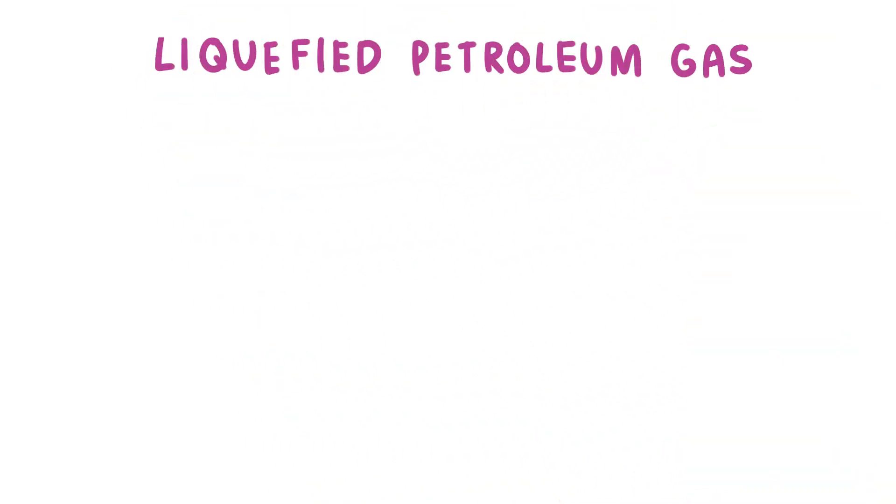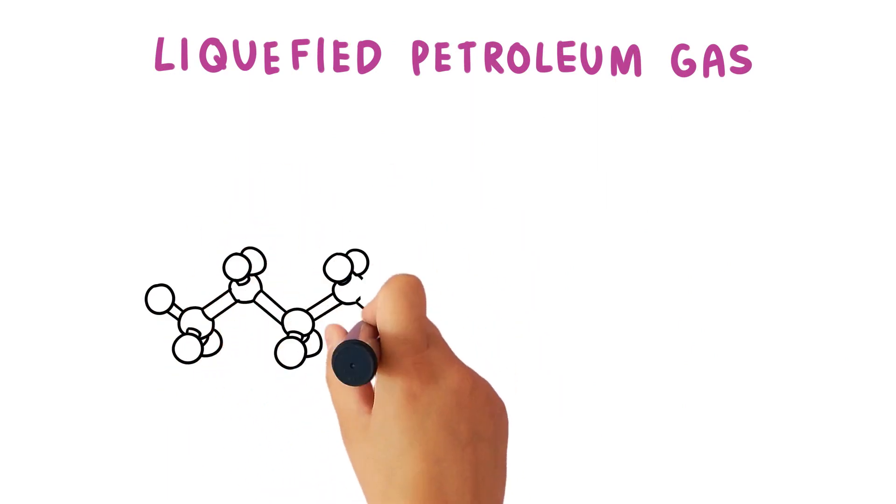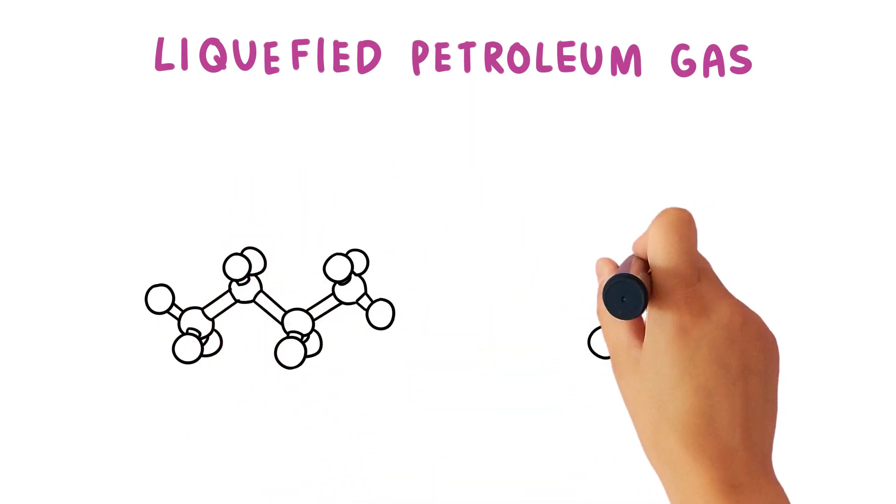Liquefied petroleum gas, widely known as LPG, consists of one or more hydrocarbon compounds, including three or four carbon atoms that can be easily liquefied.